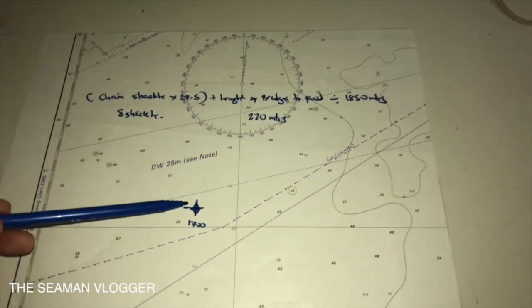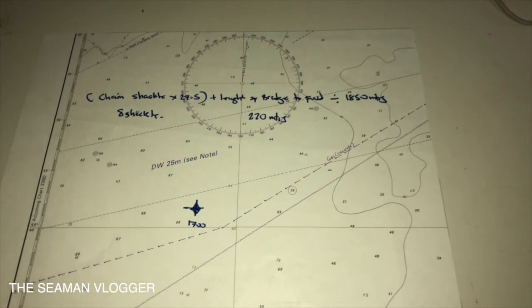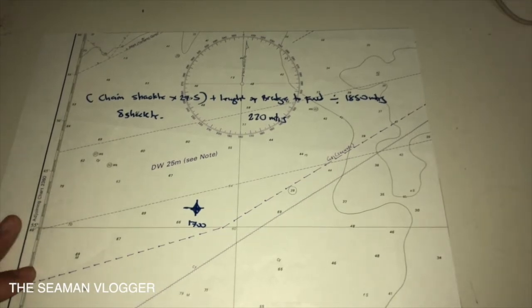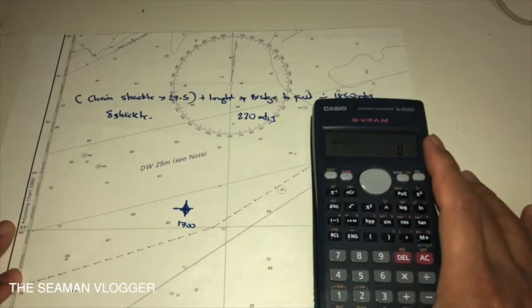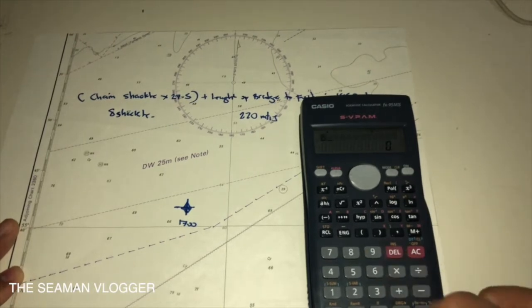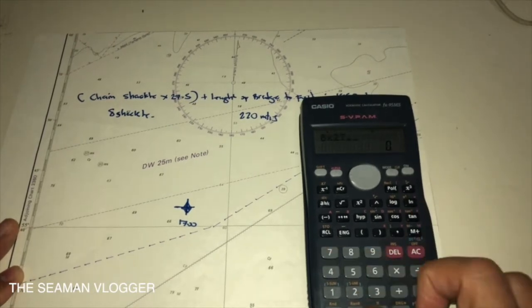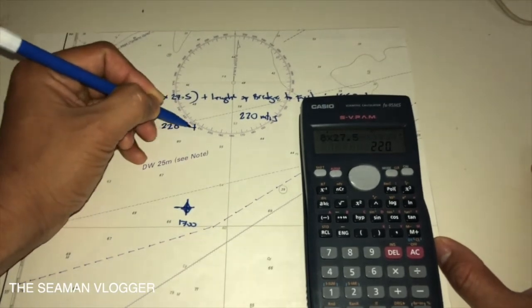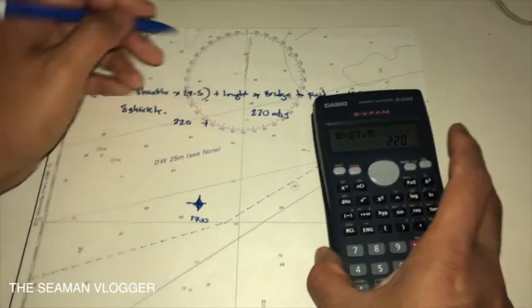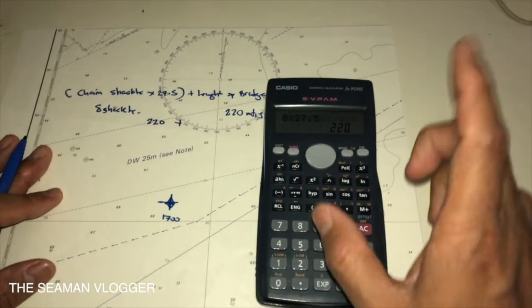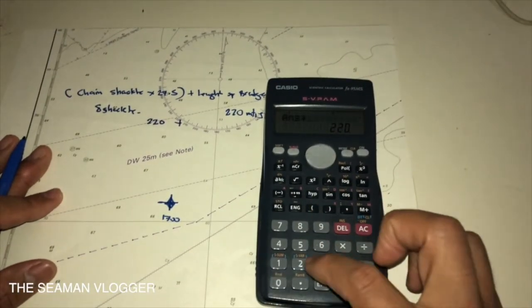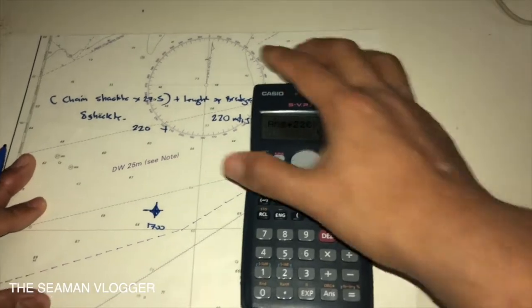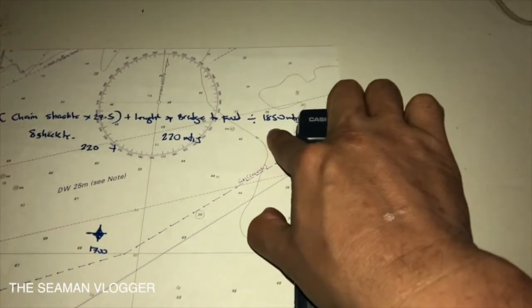And you drop your anchor, for example, in this position, about 1700. Now, we are going to compute. So, chain is 8 times 27.5 equals to 220 plus this one, 220 plus 220 divided by 1850.